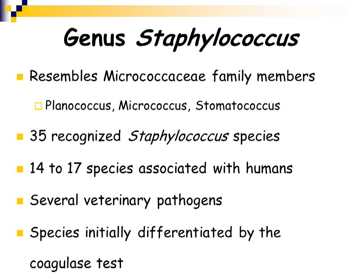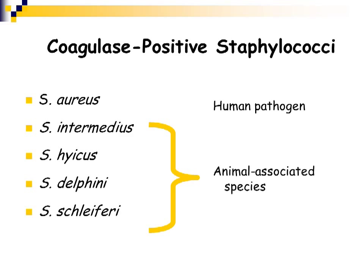All staphylococcus species are catalase positive, and how you differentiate the species is through the coagulase test. All staphylococcus are catalase positive, but only a few are also coagulase positive. The coagulase positive staphylococci include Staphylococcus aureus, Intermedius, and Delphini, among several others. However, the only one we are concerned with is Staphylococcus aureus, because out of these coagulase positive species, aureus is the only human pathogen.